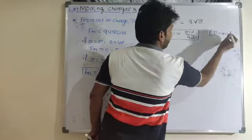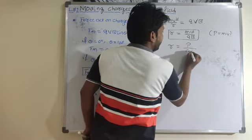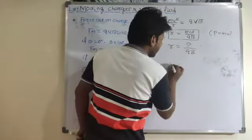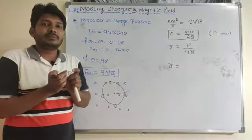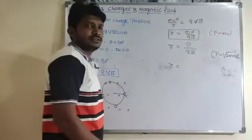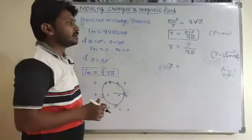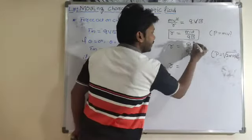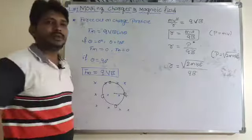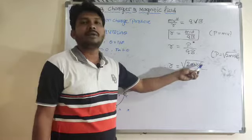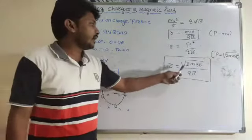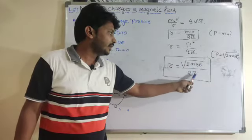Since linear momentum p = mv, we get r = p/qB. From mechanics, the relation between momentum and kinetic energy is p = √(2m·KE). Substituting, the radius can also be written as r = √(2m·KE) / (qB).